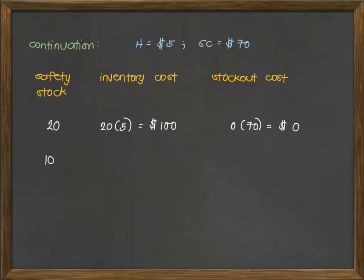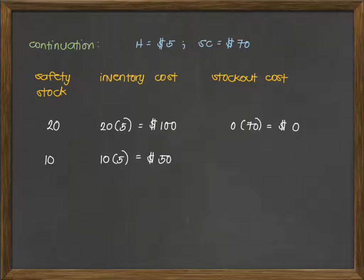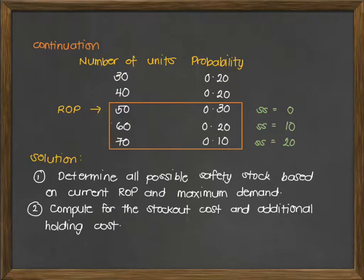The next scenario is kapag naging 10 yung safety stock, meaning we are accommodating 60 units of demand. So 10 times $5 will incur a lower inventory cost. However, there is a chance of stock out cost, kasi at 10 safety stock, may chance na maging 70 yung demand and we are currently at 60. Kapag naging 70 yung demand, may chance of having a stock out. Balikan natin yung ating given: there is a 10% chance, or 0.1 chance, of having a demand of 70.